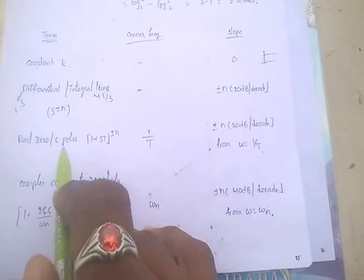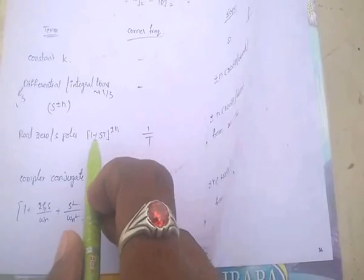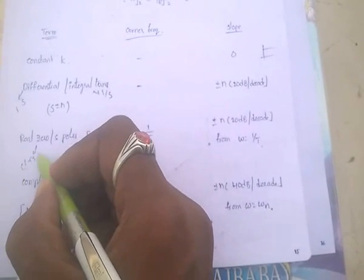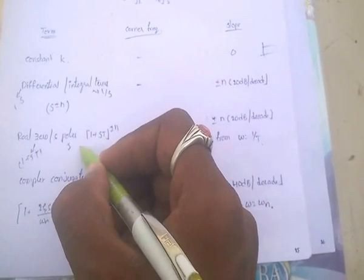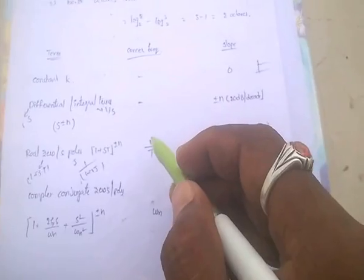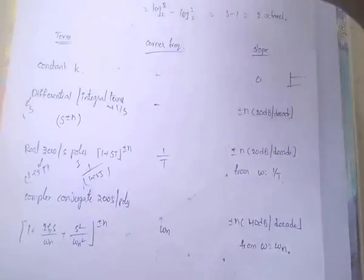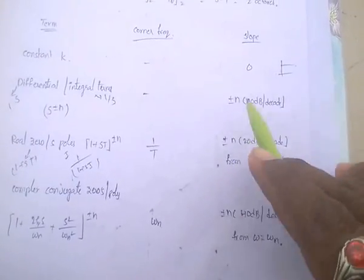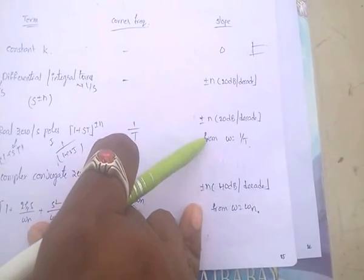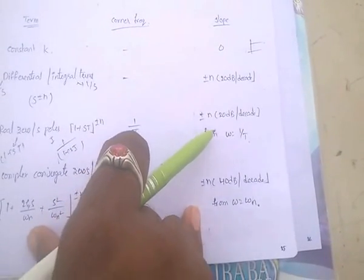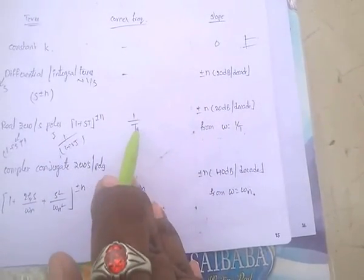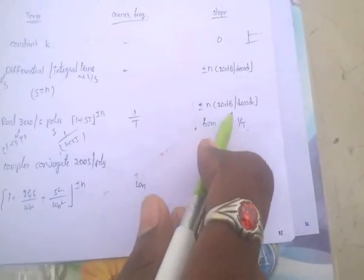For real zeros or poles, in the form of (1+sT) to the power of plus or minus n: zeros mean (1+sT), poles mean 1/(1+sT). The corner frequency is 1/T, and the slope is plus or minus n into 20 dB per decade, starting from omega equal to 1/T.